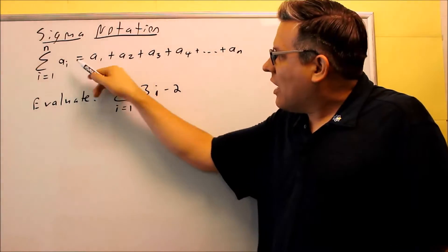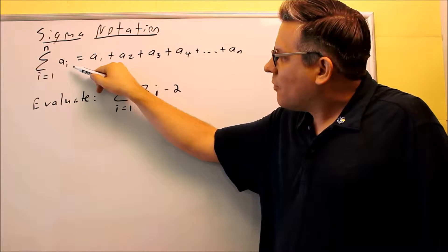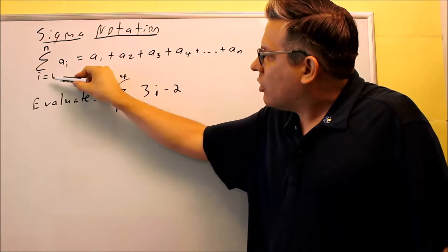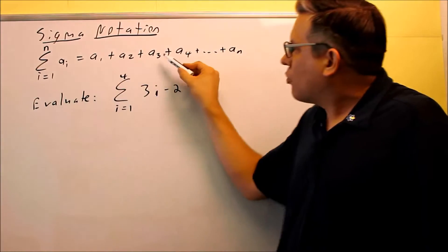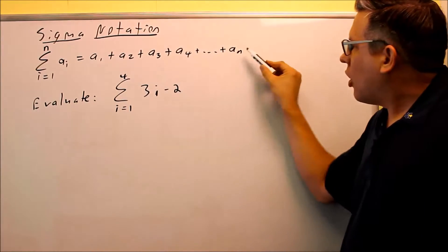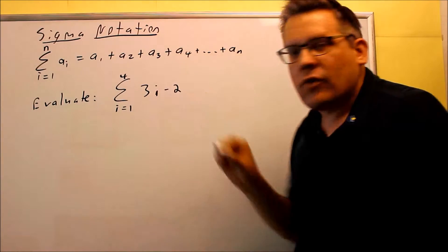So with this you have a and then that's a subscript i. That means that you're putting a 1 in for i, a 2 in for i, and a 3 in for i, and so forth. You keep doing that all the way up until you reach whatever n is.